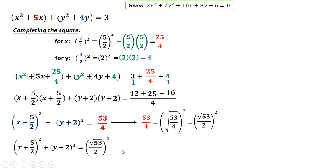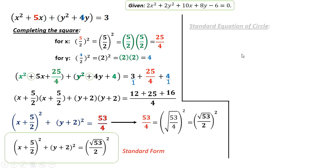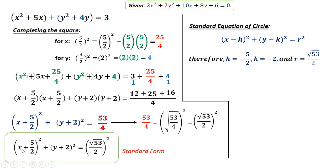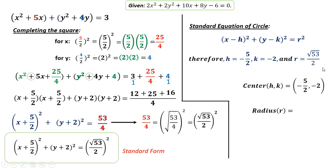From the standard form, using the standard equation of a circle as our guide: from the computed equation, our H comes from x plus 5 over 2 — since the sign is positive inside the parenthesis, H is negative 5 over 2. For y plus 2, since the sign is positive, K is negative 2, because negative times negative gives positive. The radius is the base: square root of 53 over 2. So the center is negative 5 over 2 and negative 2, and the radius is square root of 53 over 2.